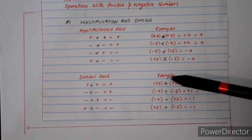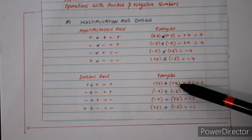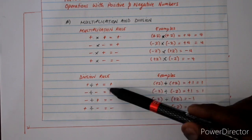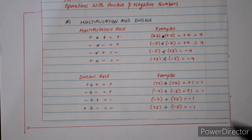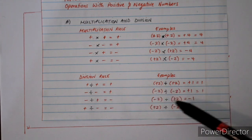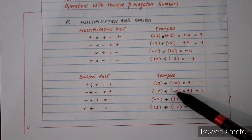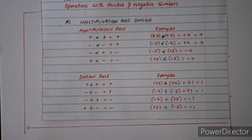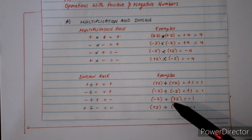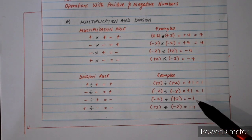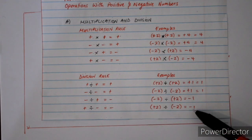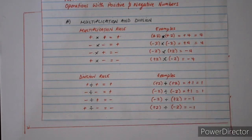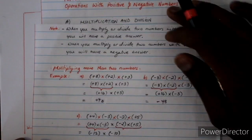For example, positive 2 divided by positive 2 — positive divided by positive is positive, and 2 divided by 2 is 1, so the answer is 1. Negative 2 divided by negative 2 — solve the sign first, negative divided by negative is positive, so the answer is positive 1. Negative divided by positive is negative, so negative 2 divided by 2 is negative 1. Positive divided by negative is also negative 1.